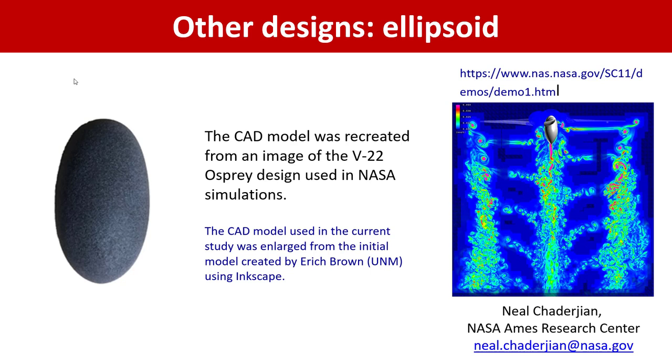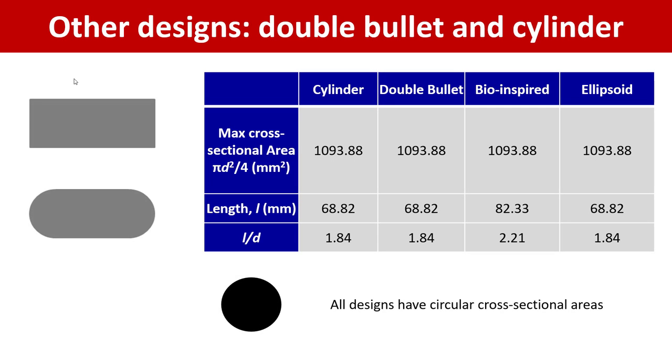Other designs considered include a canonical three-dimensional cylinder. We also created a double bullet design which is a cylinder with smooth ends, hemispheres of the same radius as the cylinder. The dimensions for all four designs considered in our study are shown on the slide in the table. The cross-sectional area of all four designs was circular and the maximum value was the same for all considered designs.